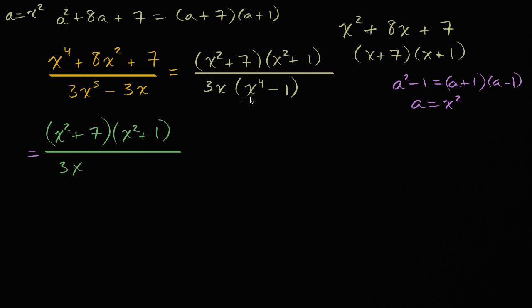But this, I can view as a difference of squares. So this is x squared squared, and this is obviously one squared, so this is going to be x squared plus one, times x squared minus one.